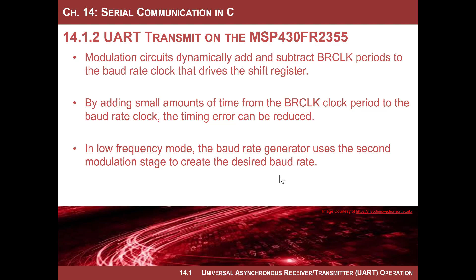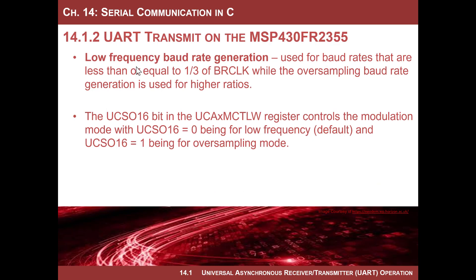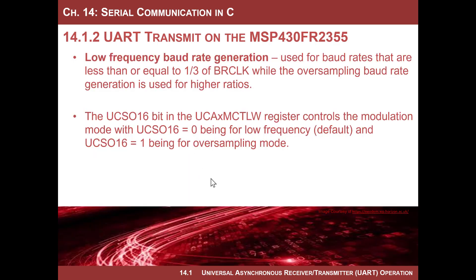Now we get into the modulation control register. There are actually two modulation stages and two modes. The first mode is low frequency baud rate generation, used for baud rates less than or equal to one third of the bit rate clock. The oversampling baud rate generation is used for higher ratios. The bit you use to set this is UCOS16 in the modulation control word — that stands for oversampling mode, either enable or disable. Depending on that setting, it dictates how you configure the modulation stage.